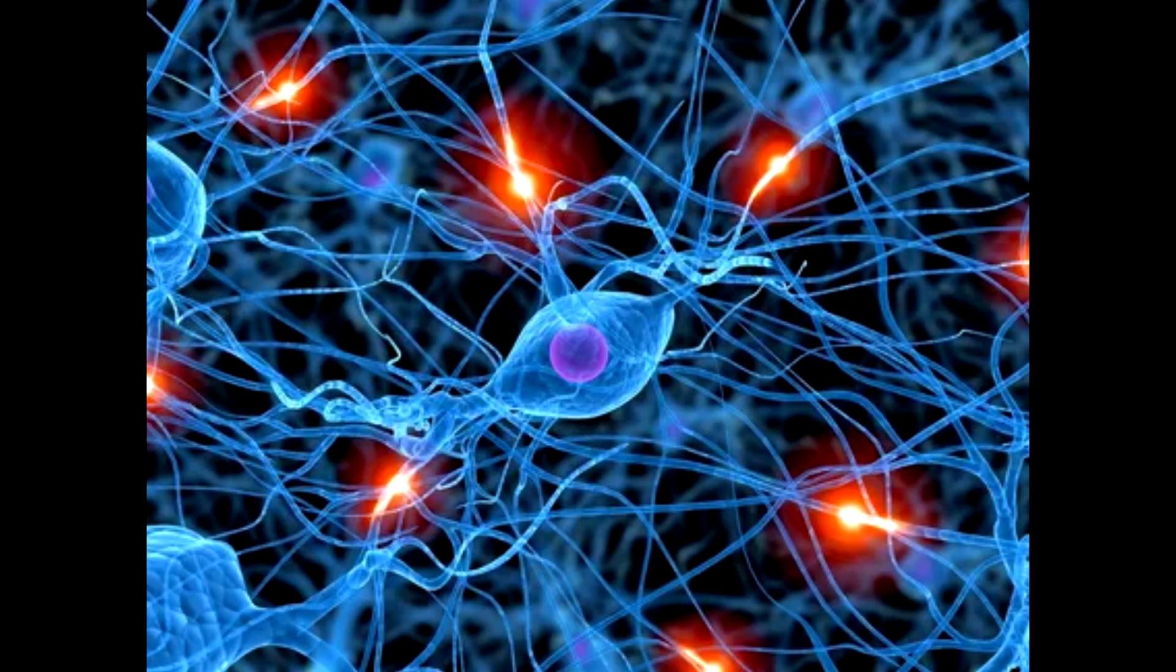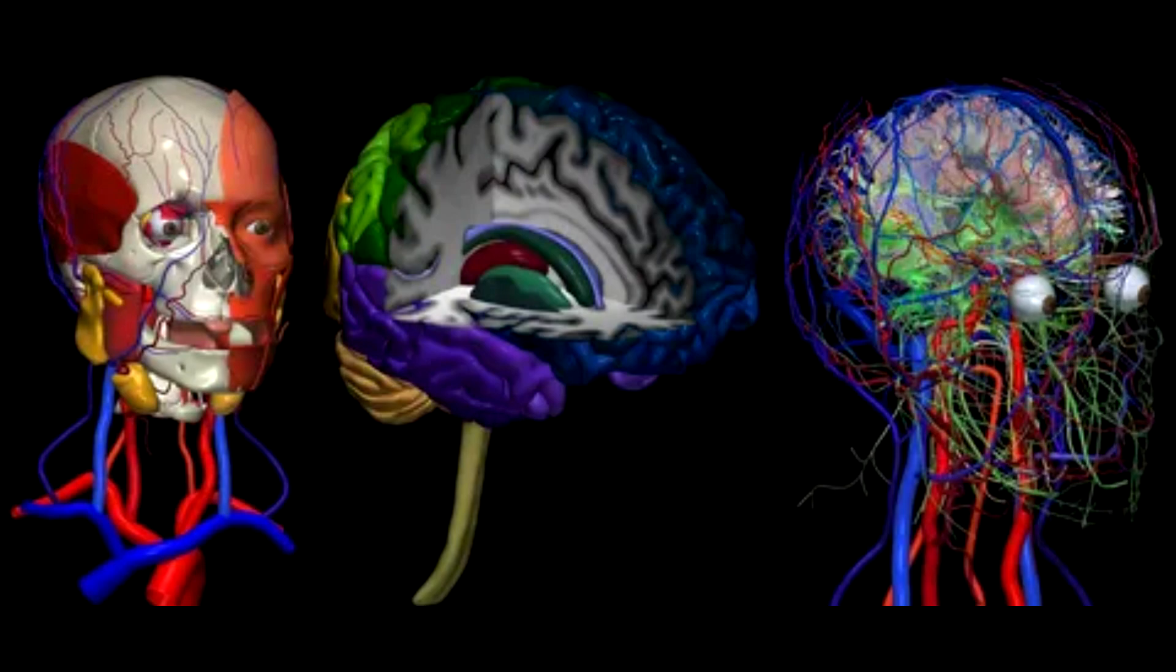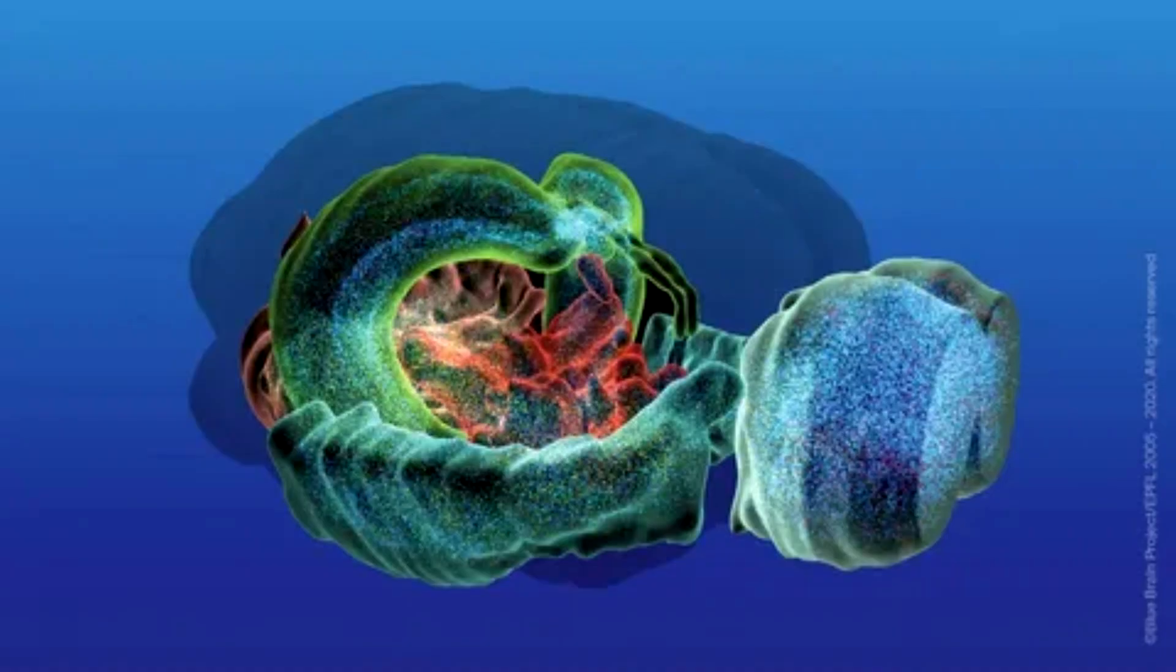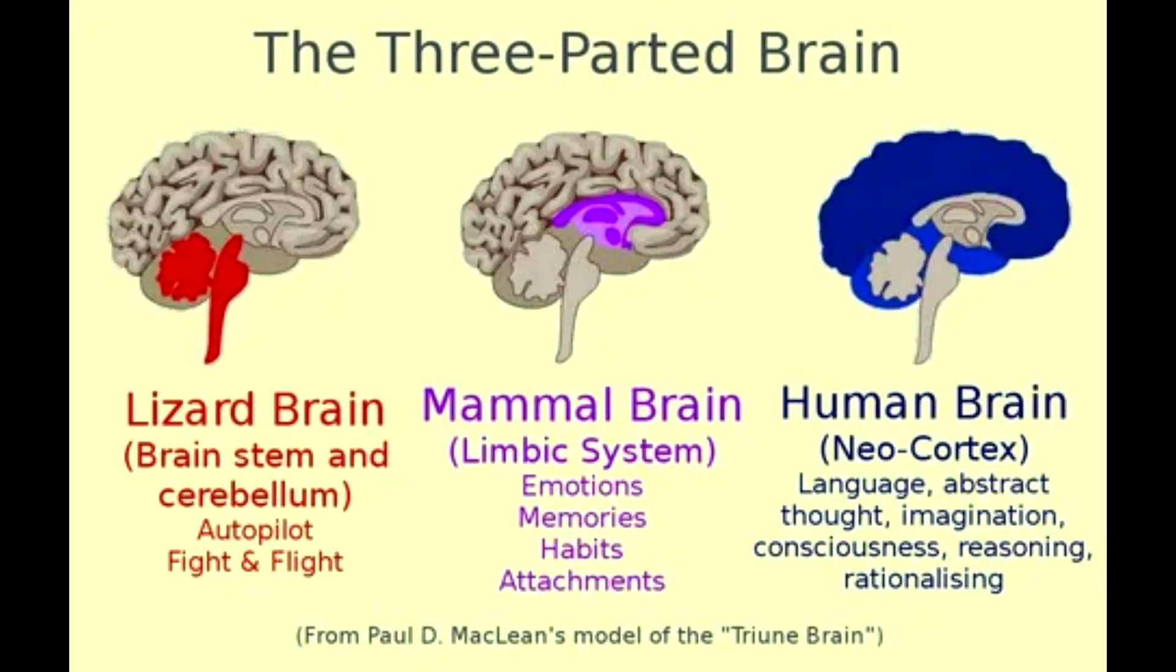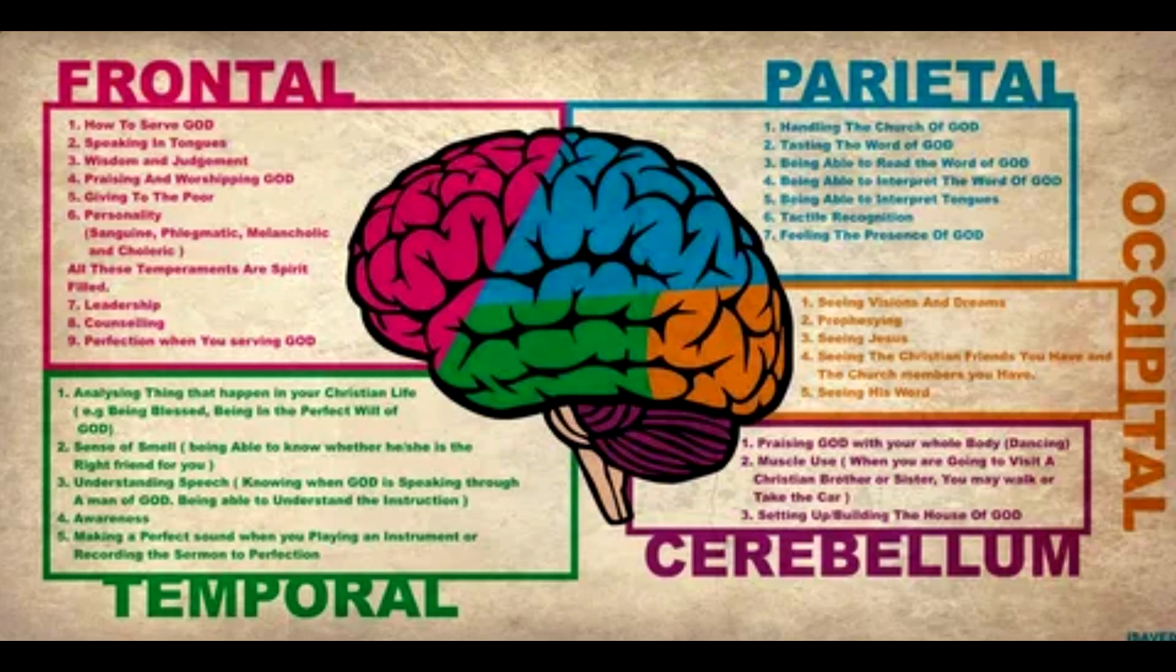The researchers used some of the same methods to study the brains of chimpanzees and other species. By comparing the results among species, the researchers investigated how the human brain evolved to be different from those of other primates. Previous studies had suggested that the human brain might be distinctive thanks in part to having evolved new kinds of cells. But the researchers were surprised to find that all of the cell types in human brains matched up with those found in chimpanzees and gorillas, our closest living relatives.